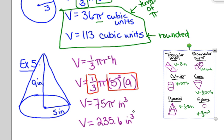So again, the difference between an answer in terms of pi and an answer that's been rounded — whether to the nearest cubic unit or the nearest tenth — is that the rounded answer will not have a pi in it.